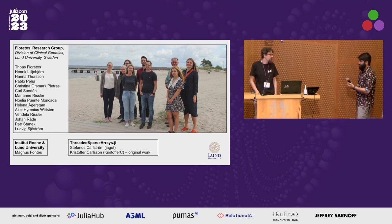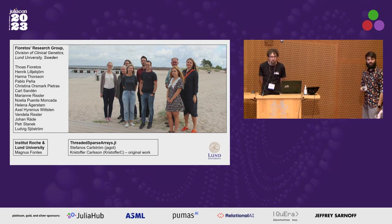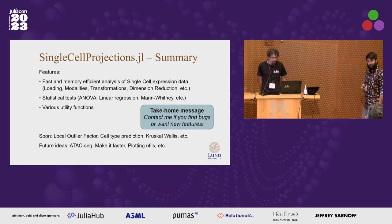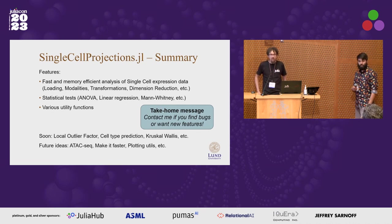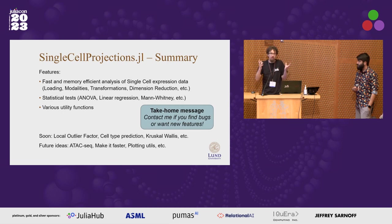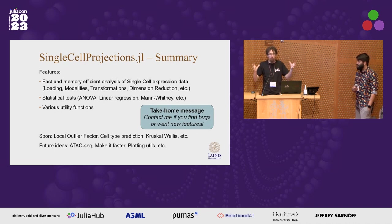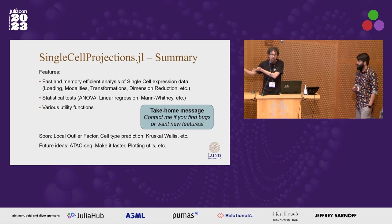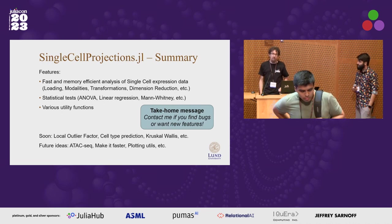A final question asks why single cell ATAC-seq is listed as a future feature rather than already supported. The speaker explains that ATAC-seq produces peaks as variables, and different patients have different peak sets, so a preprocessing step is needed to merge peaks across datasets into a common variable set. Once that alignment step is done, the package is a perfect fit — you end up with 300,000 variables instead of 30,000, and even sparser data.